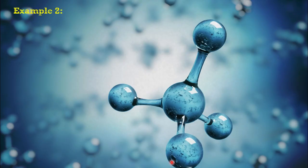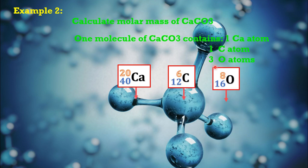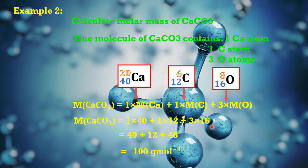Let's look at another example. How to calculate the molar mass of calcium carbonate. We can see one molecule of calcium carbonate consists of one calcium atom, one carbon atom, and three oxygen atoms. So, the molar mass of calcium carbonate equals 1 multiplied by atomic mass of calcium plus 1 multiplied by atomic mass of carbon plus 3 multiplied by atomic mass of oxygen. The atomic mass of calcium is 40, the atomic mass of carbon is 12, and the atomic mass of oxygen is 16. By solving, this gives us 100. So, the molar mass of calcium carbonate is 100 grams per mole.